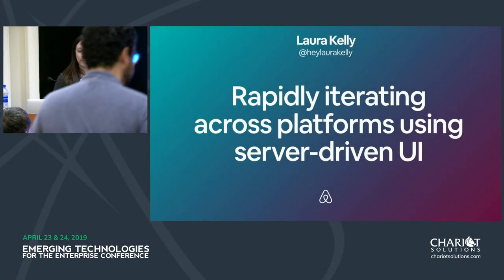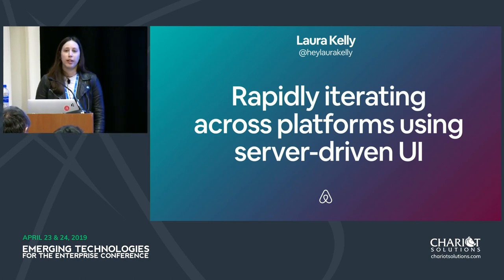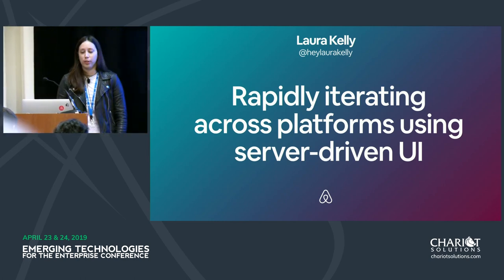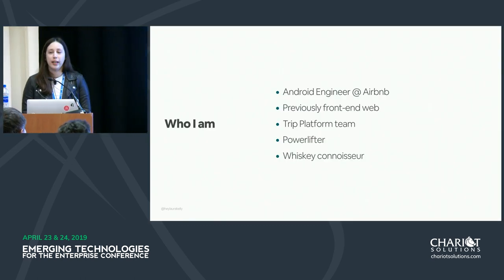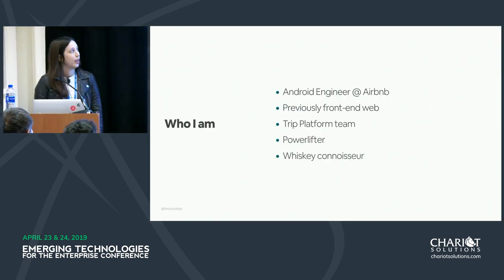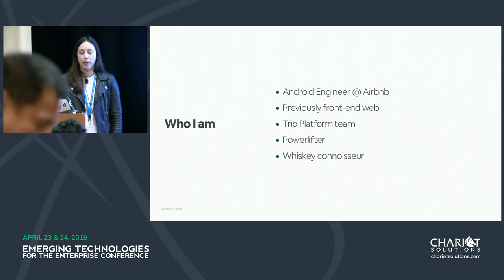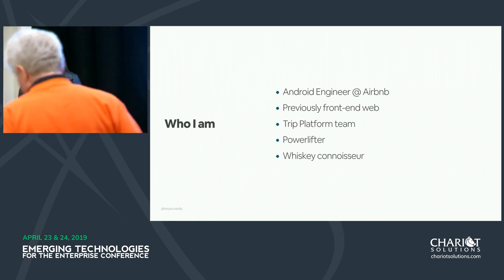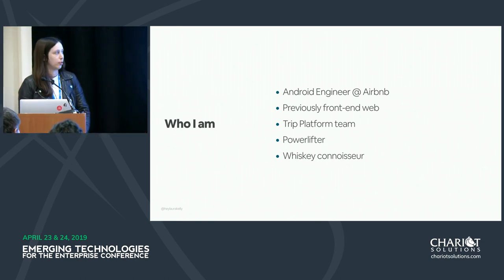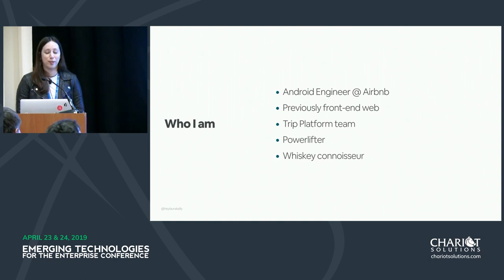Hey everyone. I'll be talking today about rapidly iterating across platforms using server-driven UI. A little bit about who I am: I'm an Android engineer at Airbnb, and I've previously worked on front-end web at Airbnb as well. I work on the Trip Platform team, which works on the itinerary and reservation screens. And in my spare time, I'm a power lifter and a whiskey connoisseur.